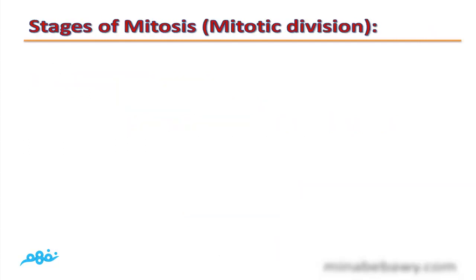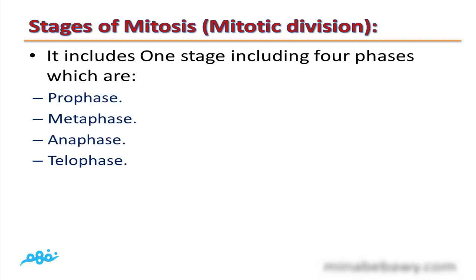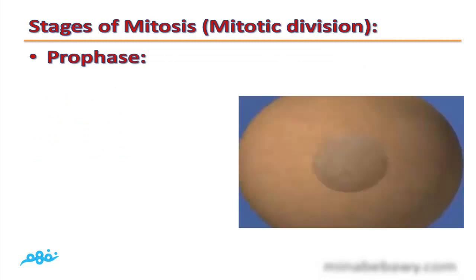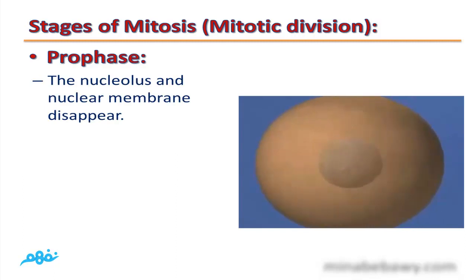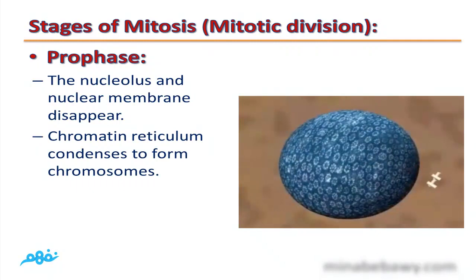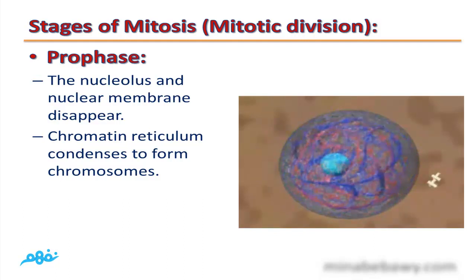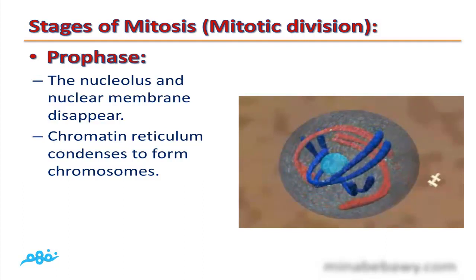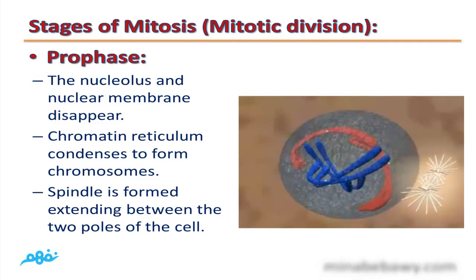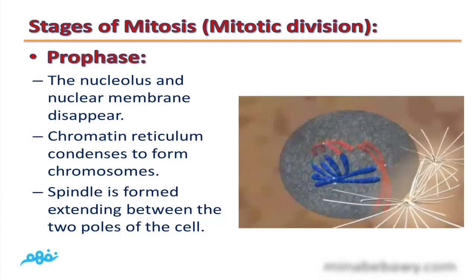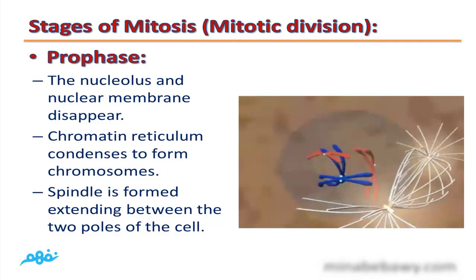Stages of mitosis: mitotic cell division includes one stage with four phases — prophase, metaphase, anaphase, and telophase. In prophase, the nuclear envelope and nucleolus disappear. Then chromatin reticulum condenses and changes into solid form to form chromosomes. Spindle fibers start to form, extending between the two poles of the cell, as can be seen in this video.